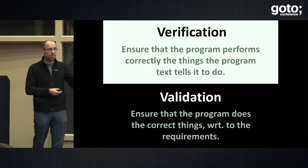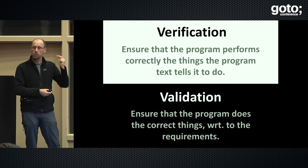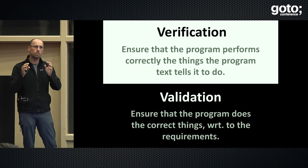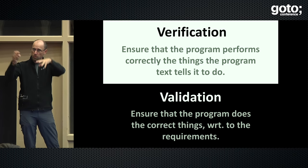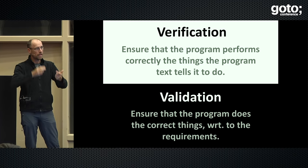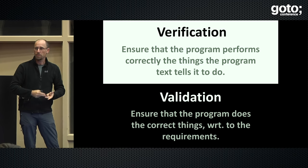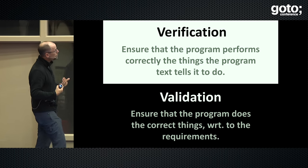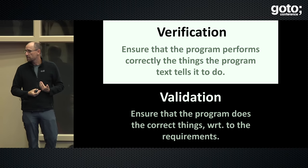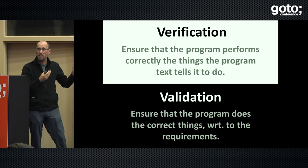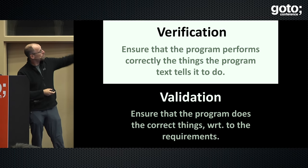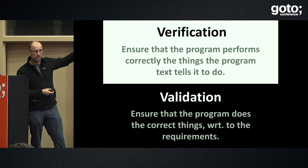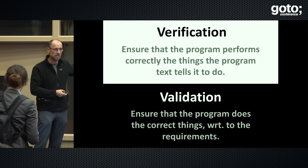We have a verification problem and a validation problem. The verification problem is: assuming the contract is specified correctly, does the blockchain — the Ethereum distributed VM — execute it correctly? Make sure there aren't any bugs or loopholes. There have been a couple of famous ones. Then we have a validation problem: making sure that the contract functionally actually behaves as we expect. This is nothing new — every software program has that problem. You do validation to make sure it does the right things, and verification to make sure it does these things the right way.